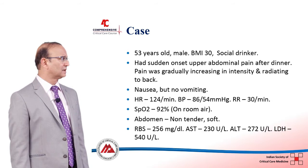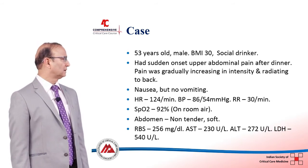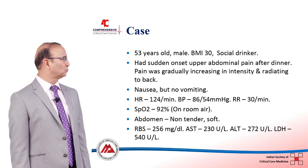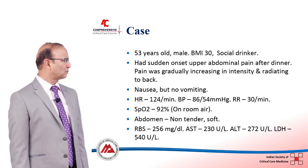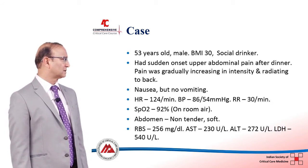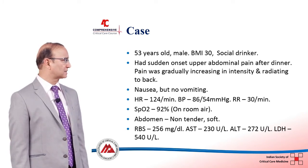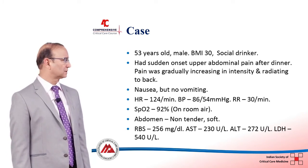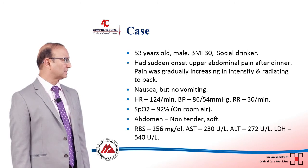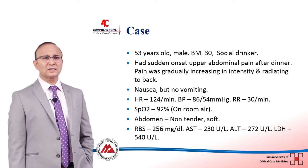Respiratory rate was 33 per minute, saturation was 92% on room air, and the abdomen was non-tender and soft. Blood sugar was 256, AST 230 units, ALT 272 units, LDH 540 units.